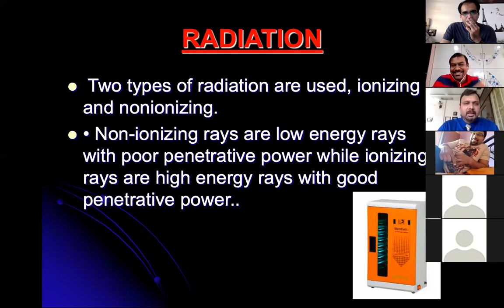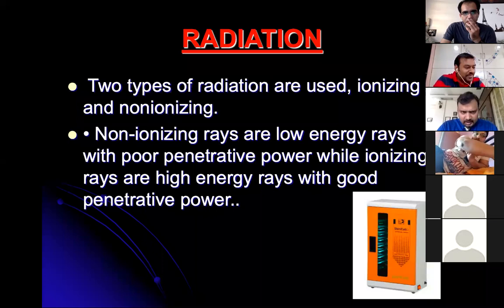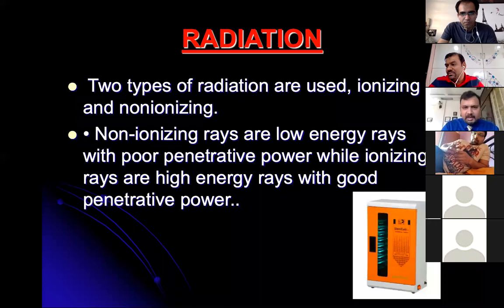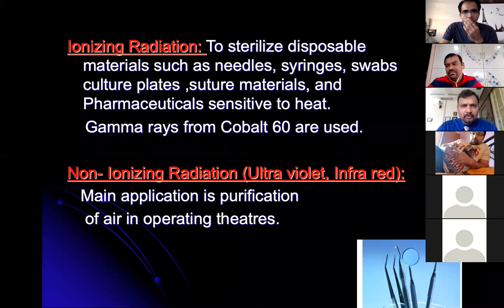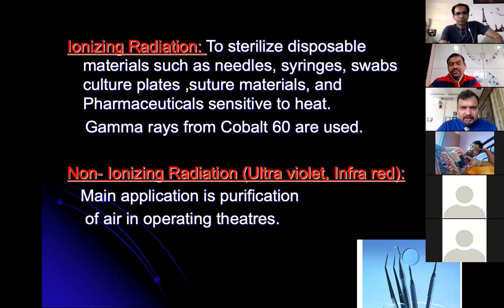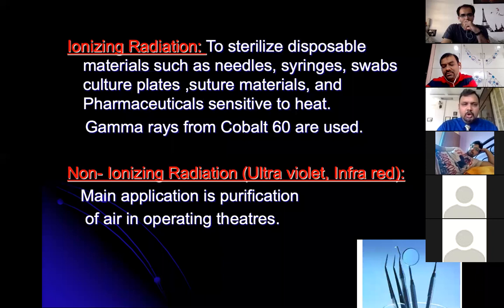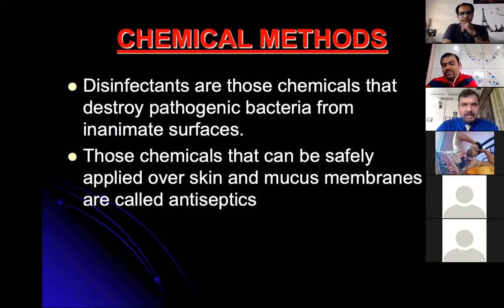Radiation sterilization has two types: non-ionizing rays, which have low energy and poor penetrative power, and ionizing rays, which have high penetrative power. UV cabinets sold in dental stores should use ionizing rays, not just decorative lighting. Gamma rays from Cobalt-60 are used for disposable materials like needles by manufacturers. Infrared rays are used for air purification in operation theaters.